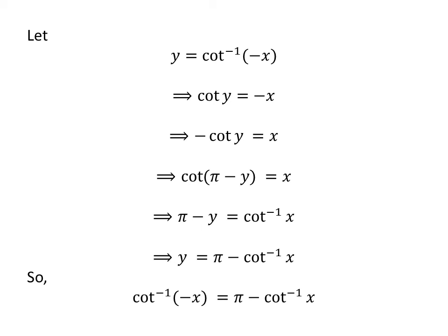We had assumed y is equal to arccotangent of minus x, so arccotangent of minus x is equal to pi minus arccotangent of x. The identity is proved.